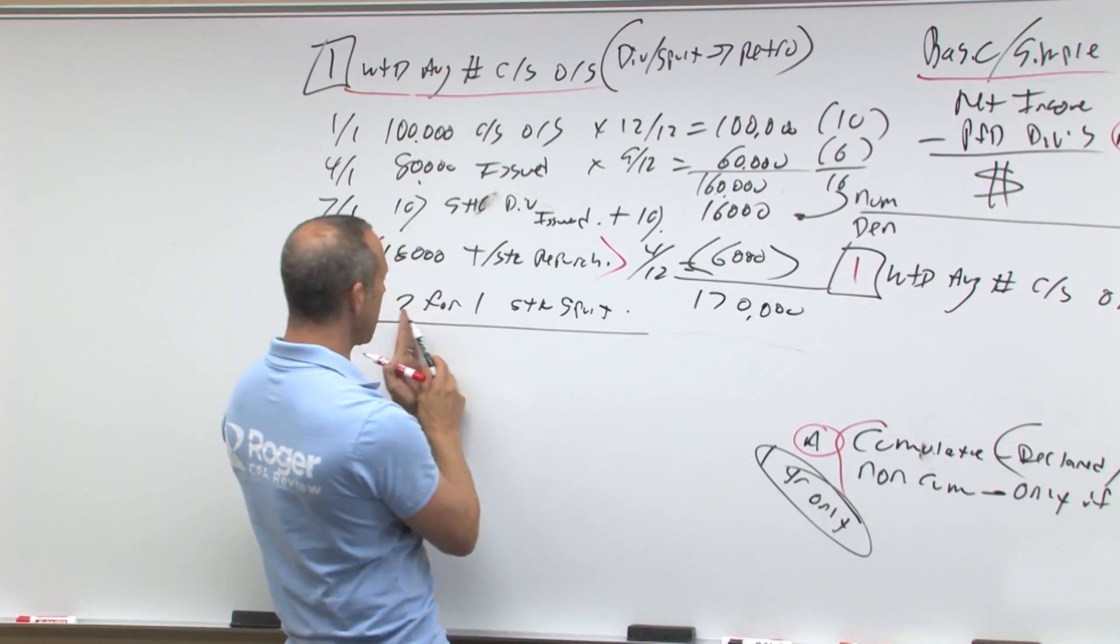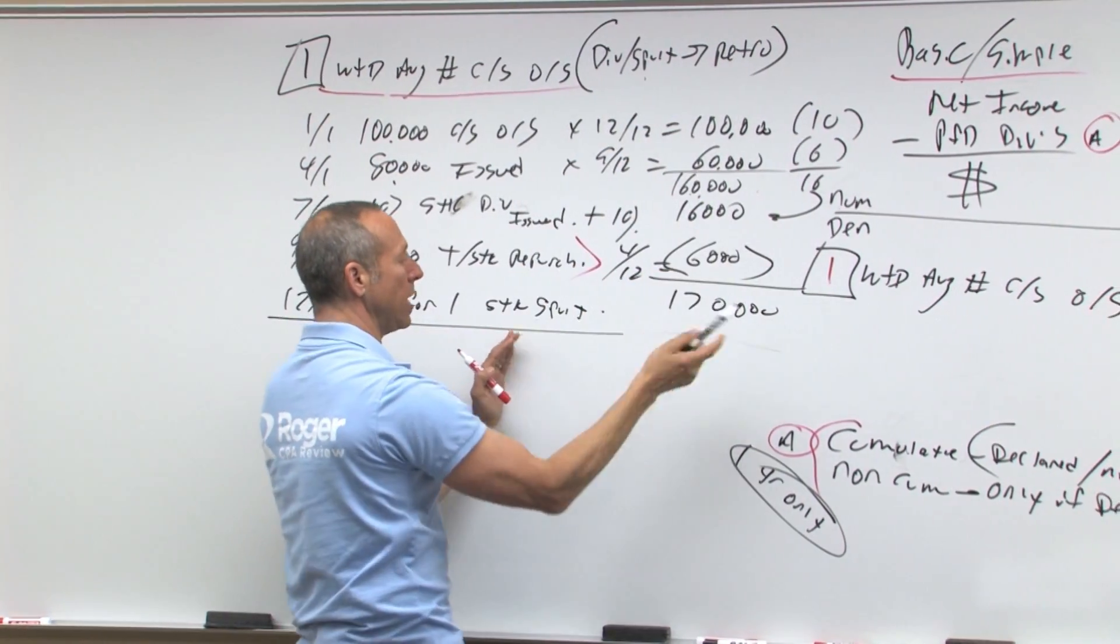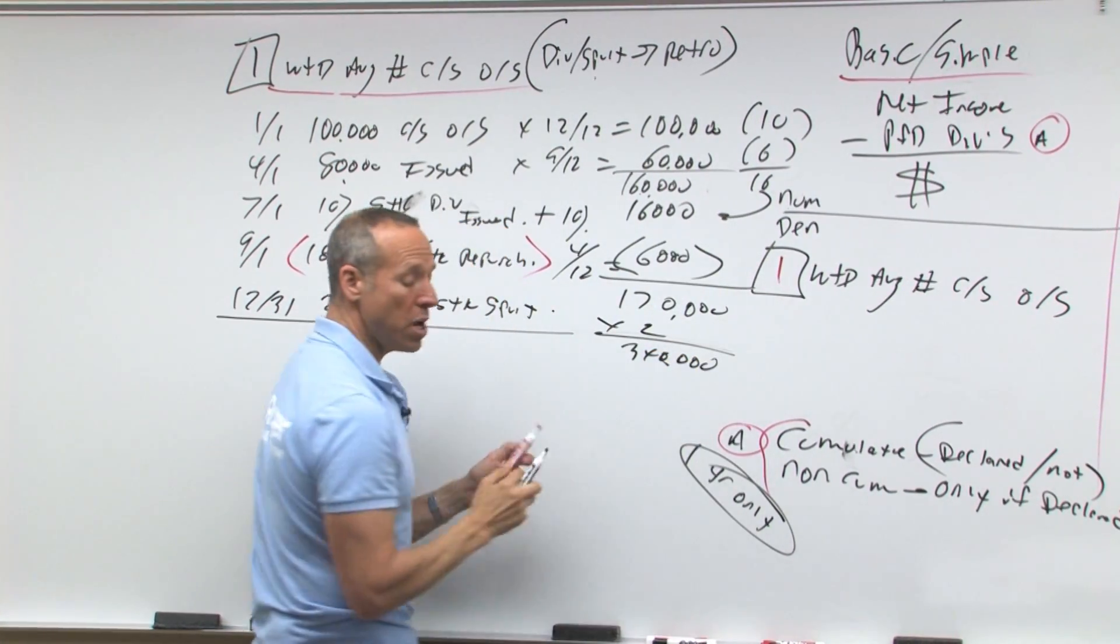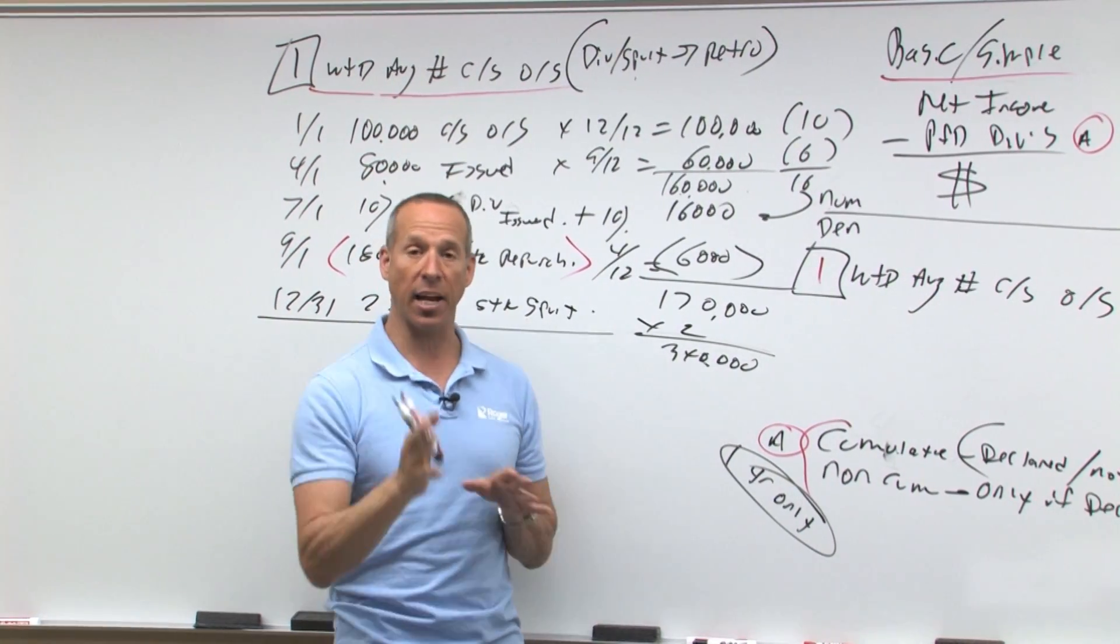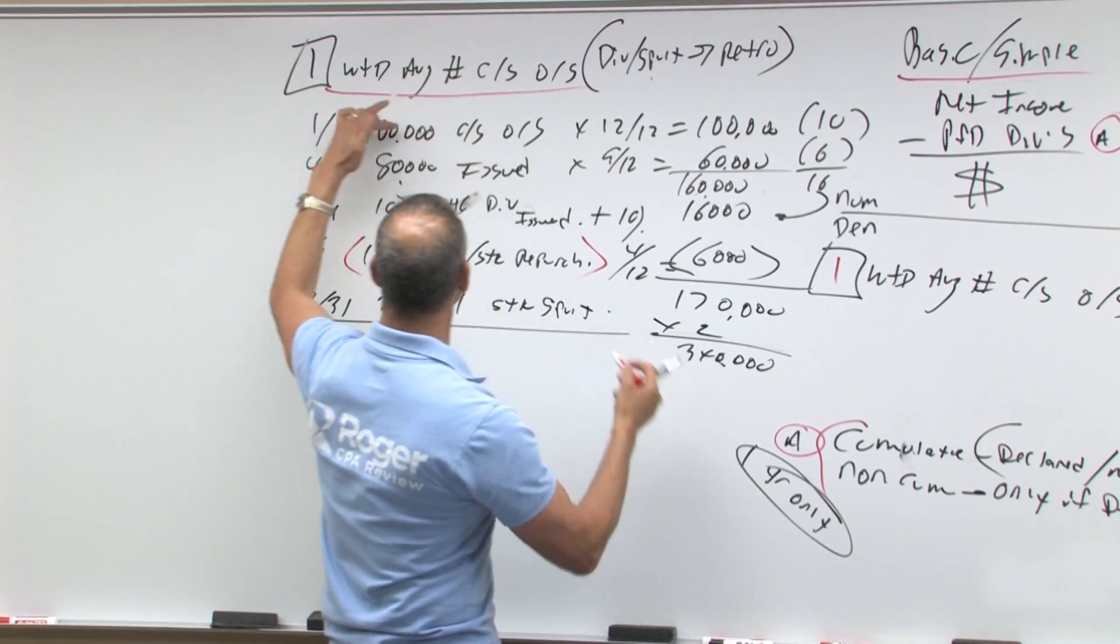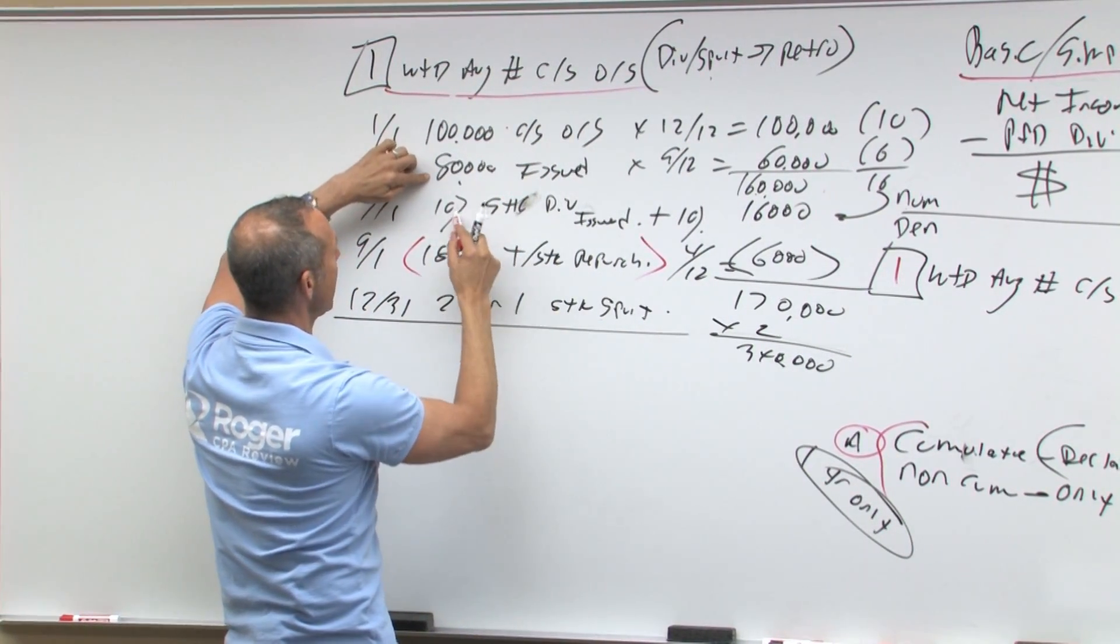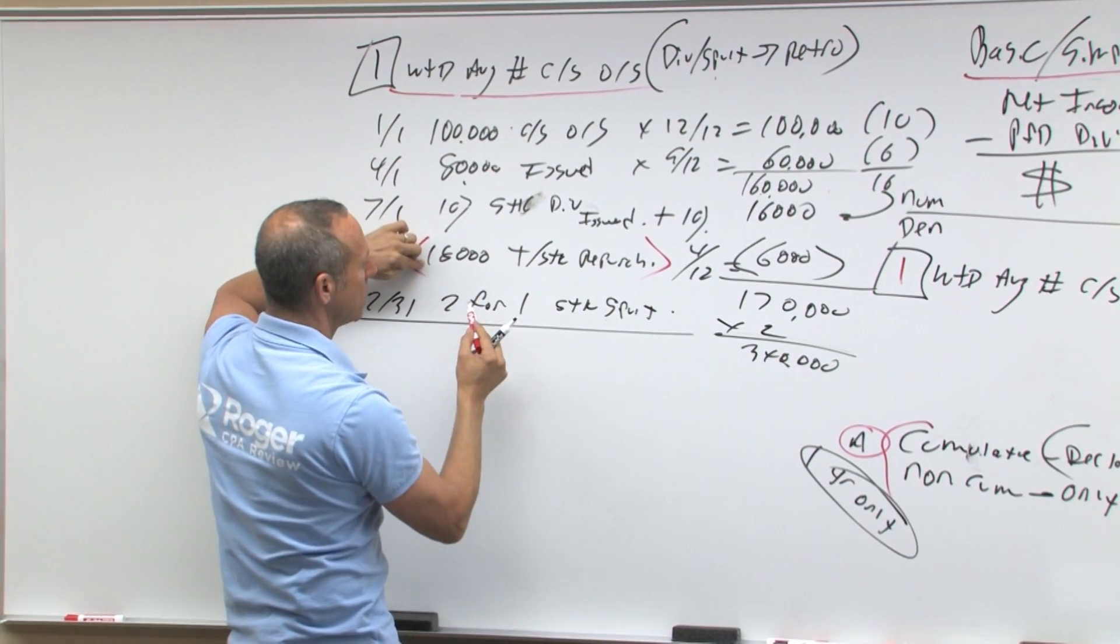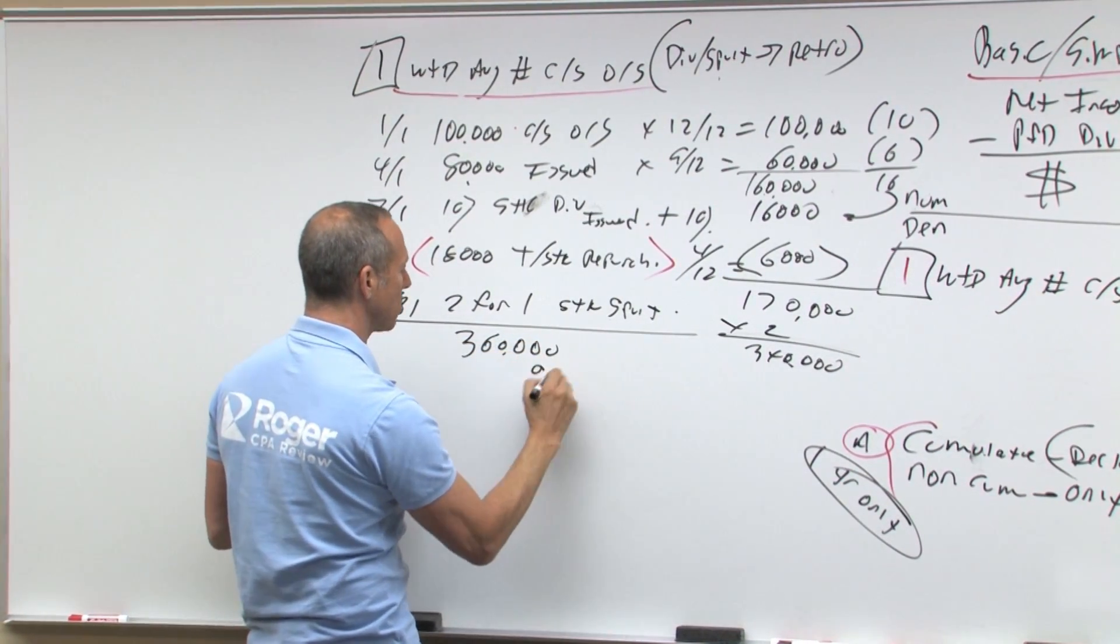Then on December 31st, stock splits are treated what? Everything above it, you hit it, so times two gives you 340. So 340 represents the weighted average number of shares outstanding. However, how many shares are really outstanding? You've got really 100 plus 80 plus another 18, 10%, minus 18 times two is 360,000 shares outstanding.